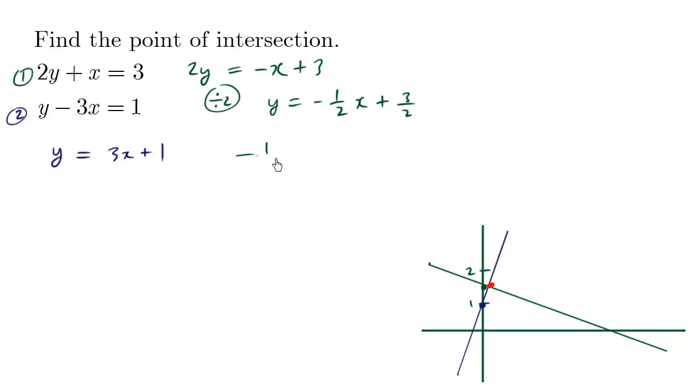So we're going to say negative 1/2 x plus 3/2 equals 3x plus 1. So we're setting the y values equal, and they happen to be equal at a particular x value. And we're going to use algebra to solve this exact x value.